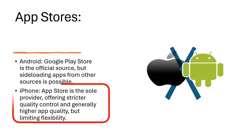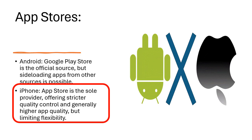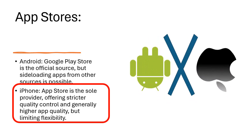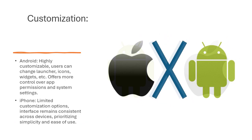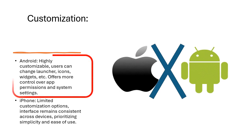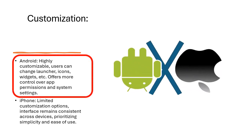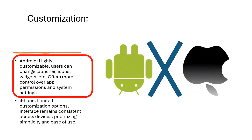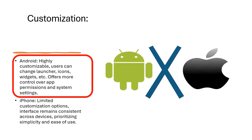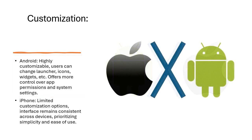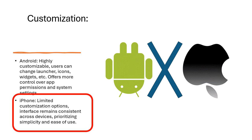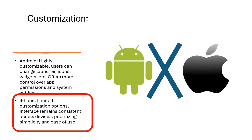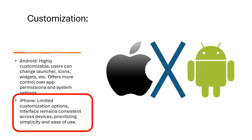Customization: Android is highly customizable — users can change launcher, icons, widgets, etc., and have more control over app permissions and system settings. iPhone offers limited customization options; the interface remains consistent across devices, prioritizing simplicity and ease of use.